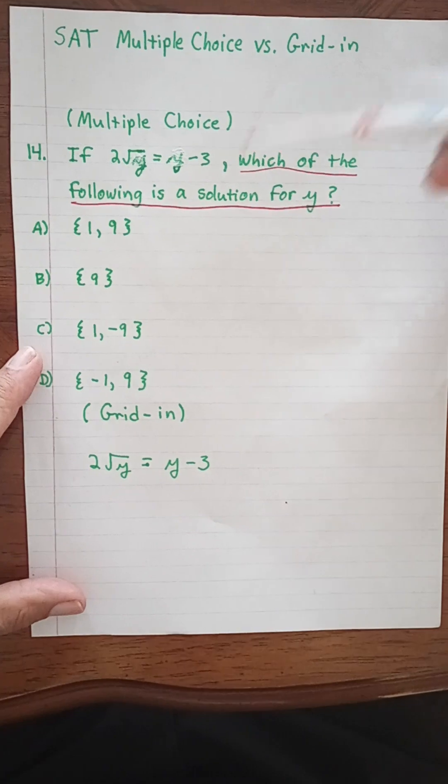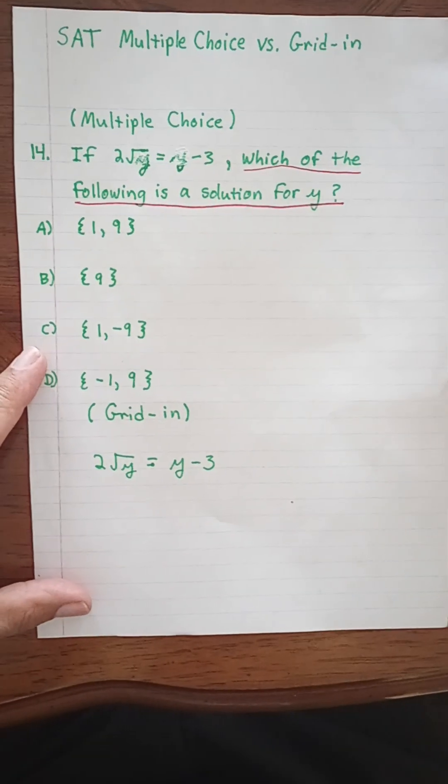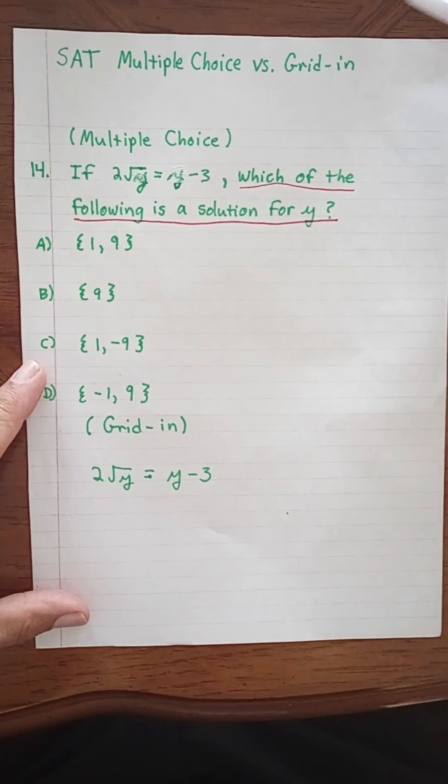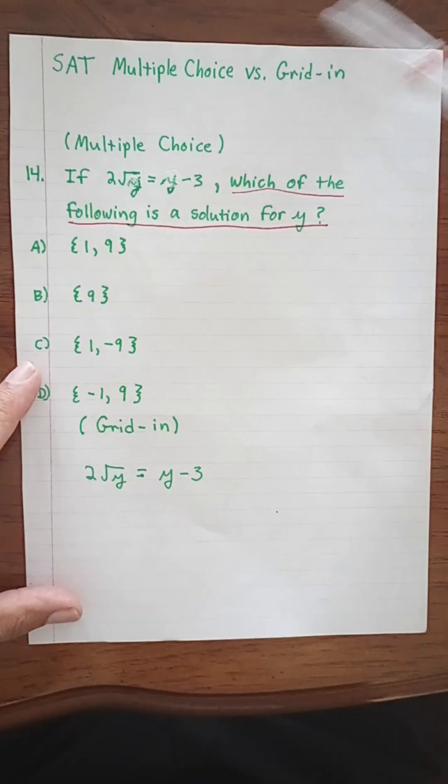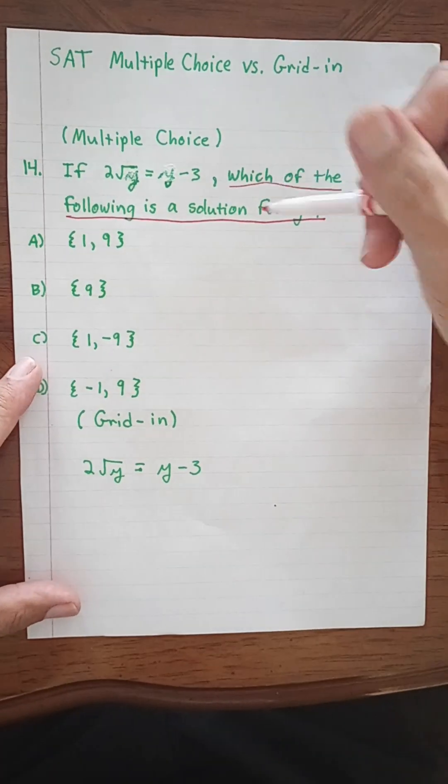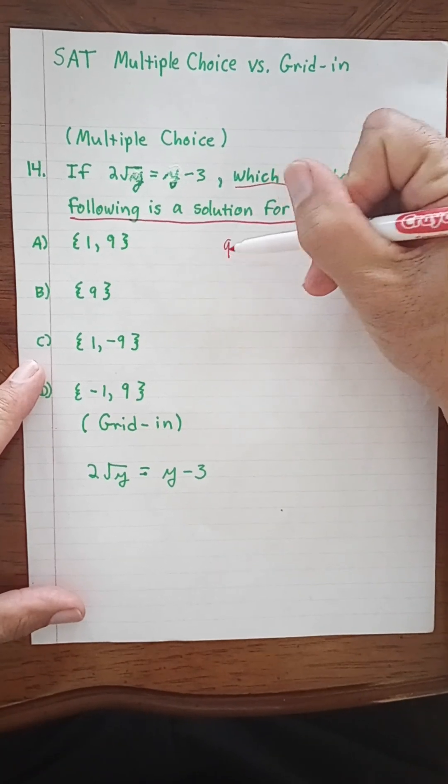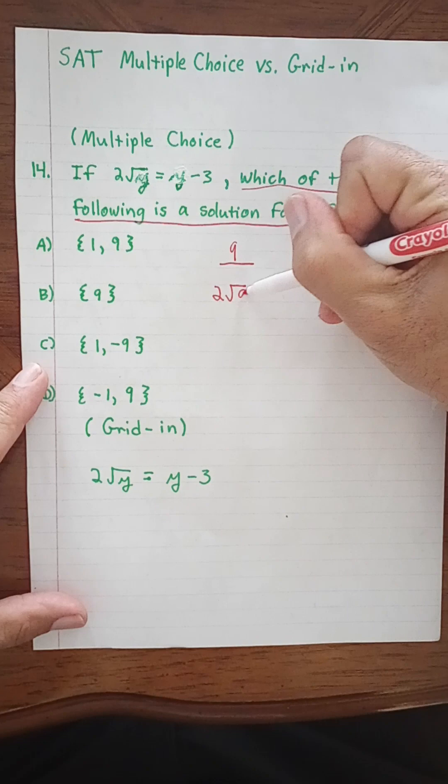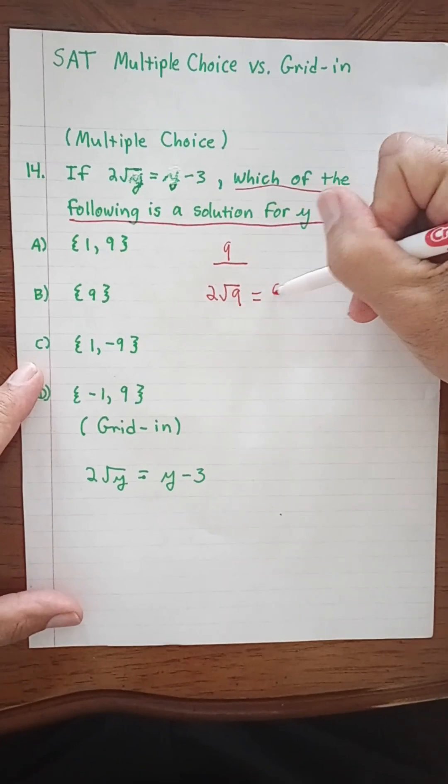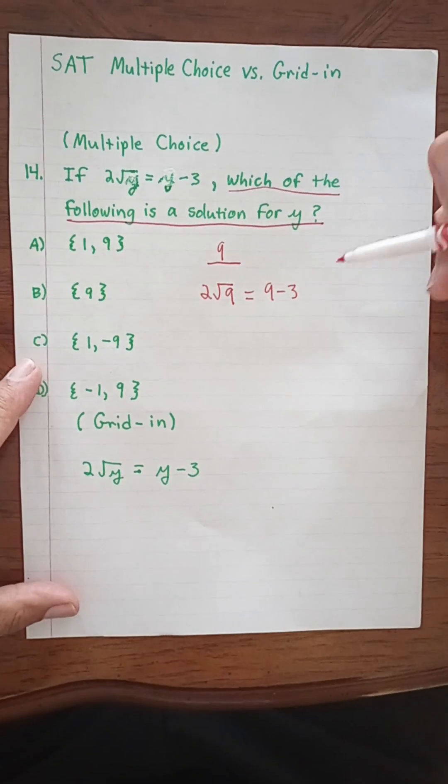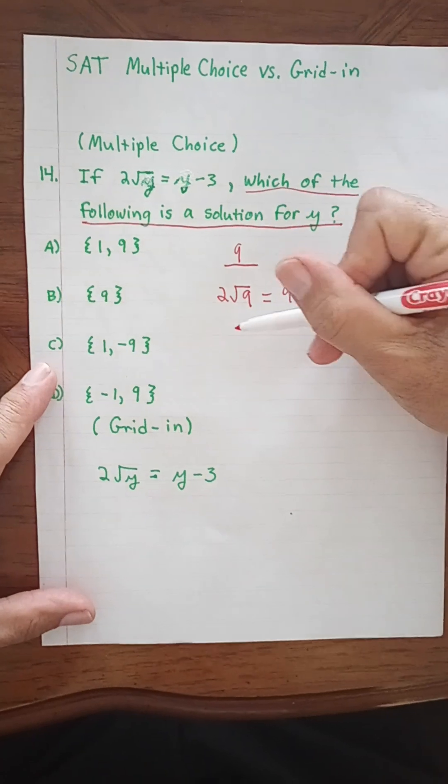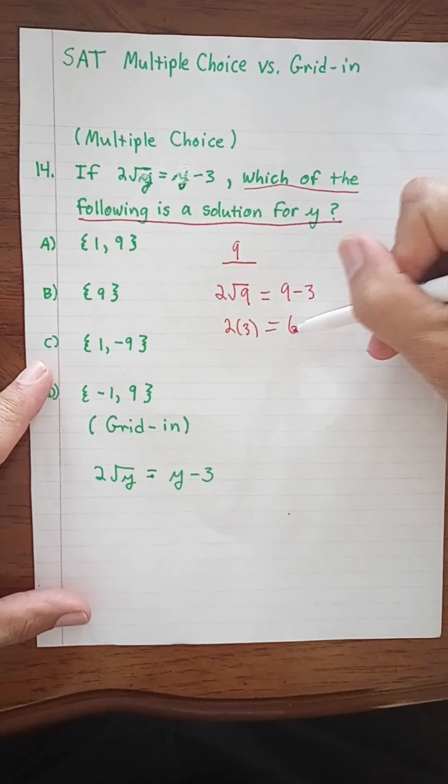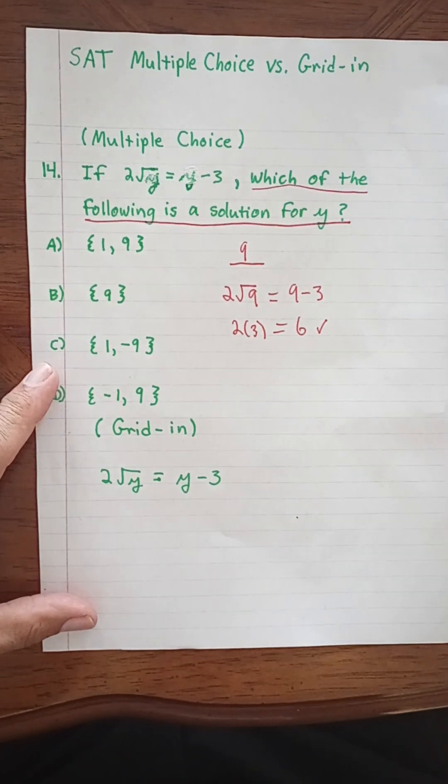What we want to do here is plug the answers in to see which one gives us a solution. We see that 9 is in a number of these problems, so let's try 9. We plug in 9 and we get 2 times the square root of 9 equals 9 minus 3. The square root of 9 is 3, so 2 times 3 does indeed equal 6, and that's a winner.